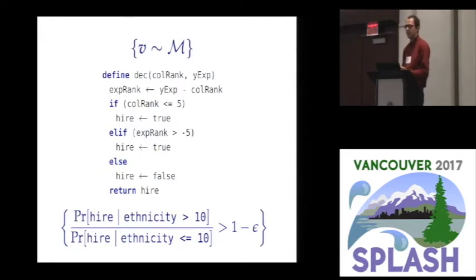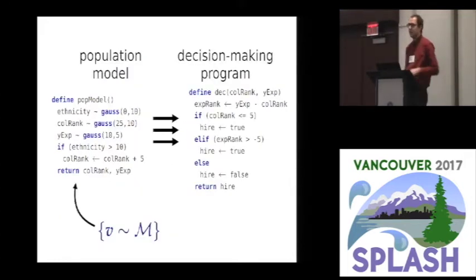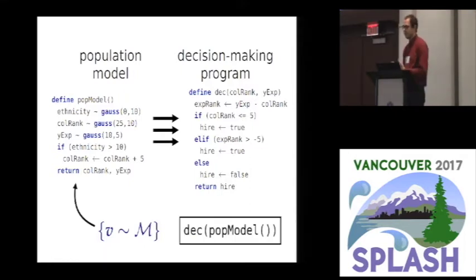And the property that we want to verify is some instance of a group fairness property. Here we assume that we have a variable that talks about the applicant's ethnicity that's encoded as a real valued number, just again for simplicity. And so someone is in a protected group if their ethnicity is greater than 10 in this example. And so we still need to say what our population model is. It's a probabilistic program where the population model draws someone's ethnicity, college rank, and years of experience from independent probability distributions. But the end of the population model also includes a mechanism for introducing correlations between some of the features. In particular, people who have ethnicity that means they are in the protected group have worse college ranks in this population.